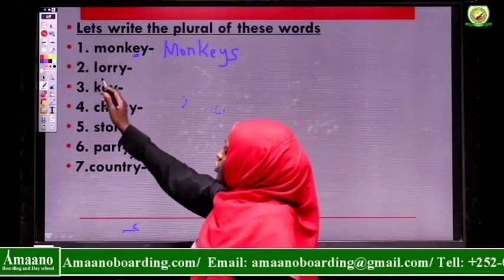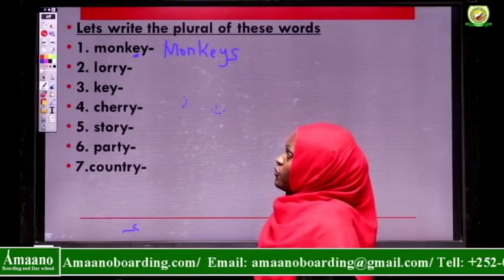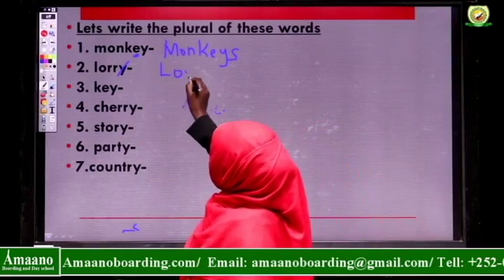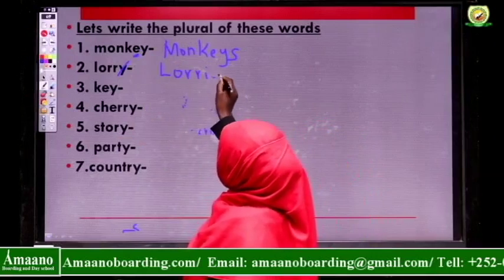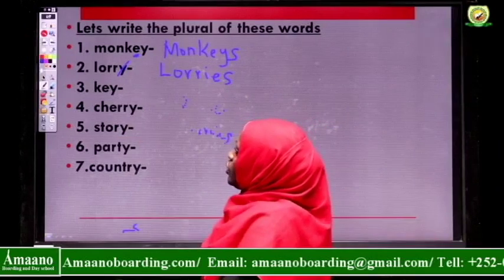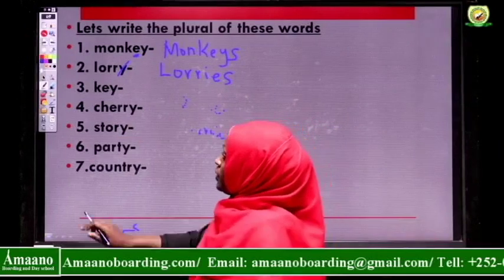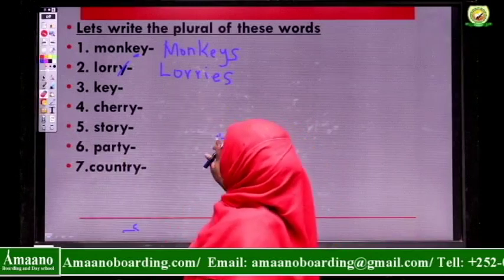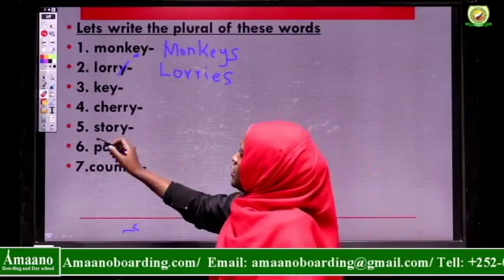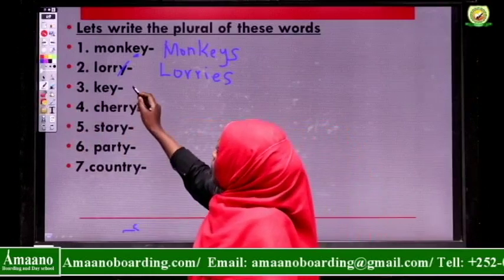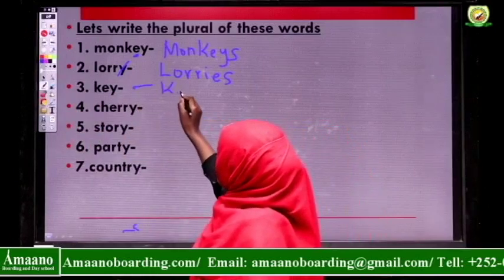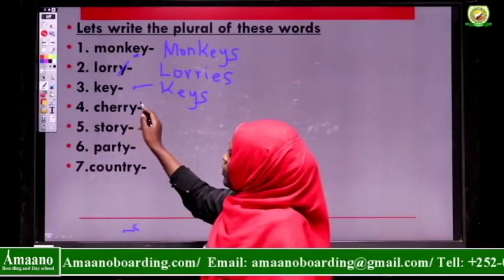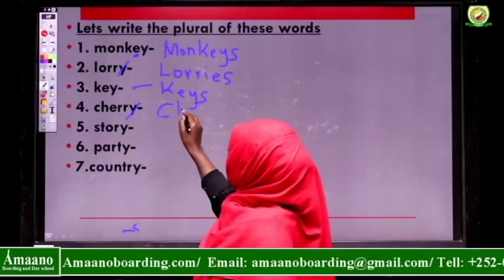We have number two — the word lorry. To write the plural of lorry, we do away with letter Y, then replace it with I-E-S. We have key — remember, if the second last letter is a vowel, we only add S. So key becomes keys. Cherry — there is no vowel before Y, so do away with letter Y. It becomes cherries.